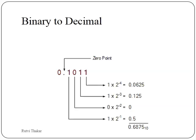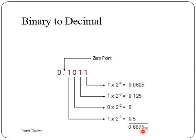Next example for binary to decimal: 0.1011. 1 is multiplied by 2 raised to -4, 1 is multiplied by 2 raised to -3, 0 is multiplied by 2 raised to -2, and 1 is multiplied by 2 raised to -1. Multiplication and addition gives the answer 0.6875 in decimal.